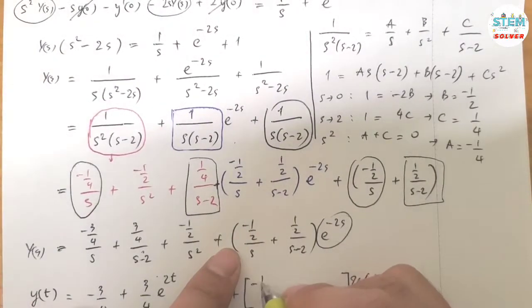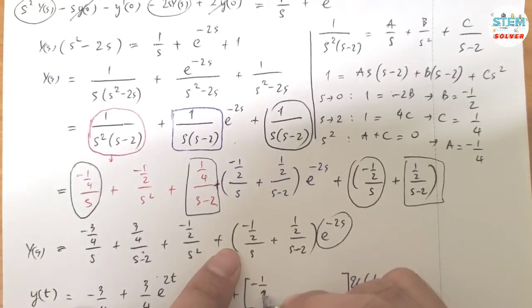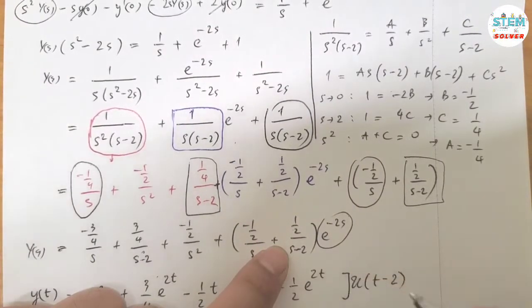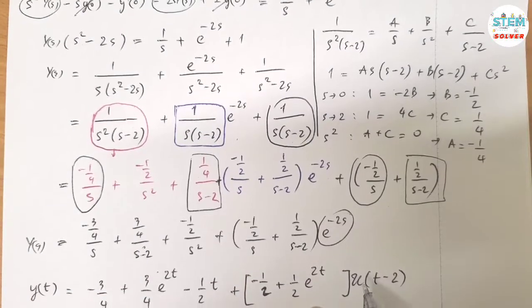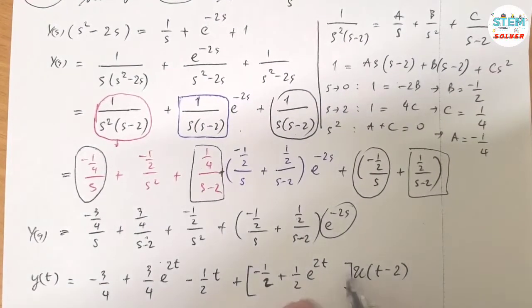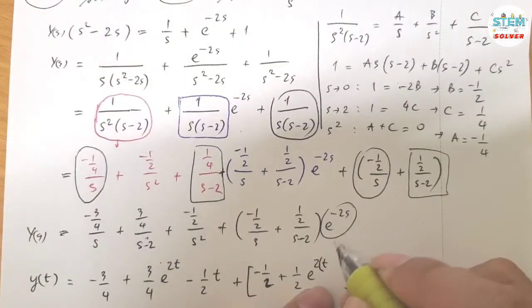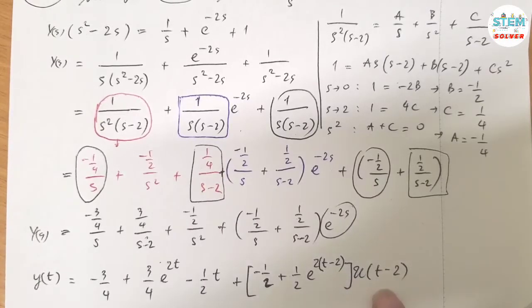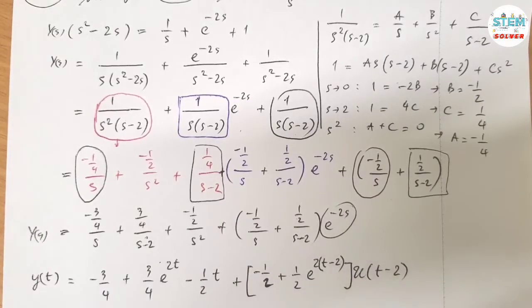With this one, you will have negative 1 half plus 1 half E to the 2T, right? Because again, you have the unit step function. So the T has to match up, which means that you are going to have T minus 2 eventually. Right? The T matches up here. The T matches up. Alright? So this is your final solution. That's it.